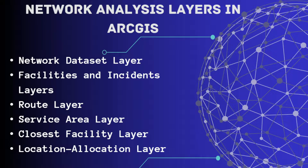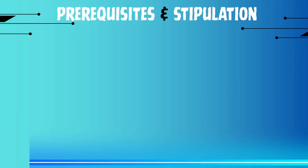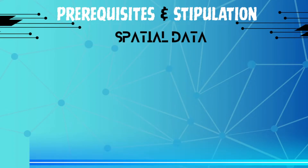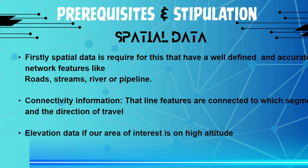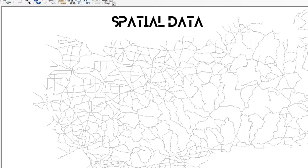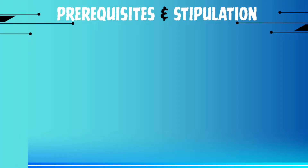These are the tools and analyses provided by network analysis — we will perform all of them one by one. In this tutorial we will see how to manage and create data for network analysis. You need spatial data in the form of line features, which can be roads, streams, or rivers. Each line feature must be connected with other line segments, and if the area has high altitude, you will also need elevation data.